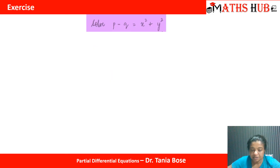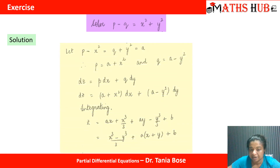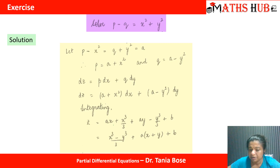For the practice problem, you can see that you can separate P and x² on one side and Q and y² on the other side. Separating gives P − x² = A and Q + y² = A, so P = A + x² and Q = A − y². Then dZ = (A+x²)dx + (A−y²)dy, which integrates simply to give the solution.